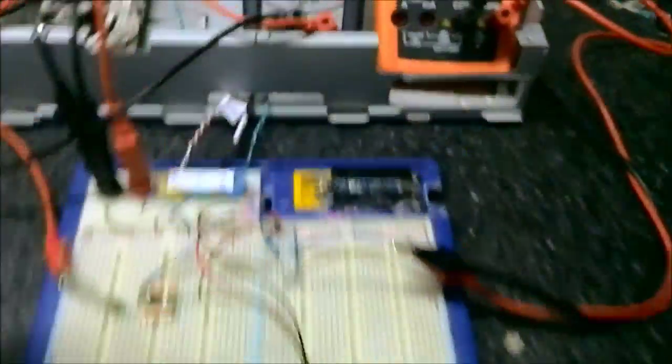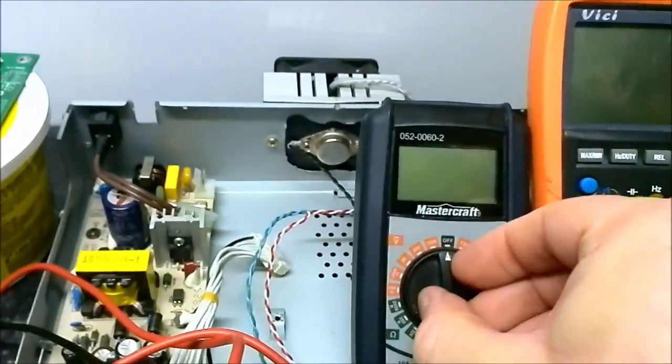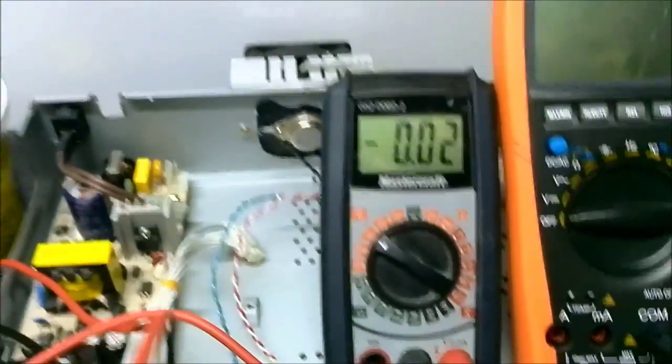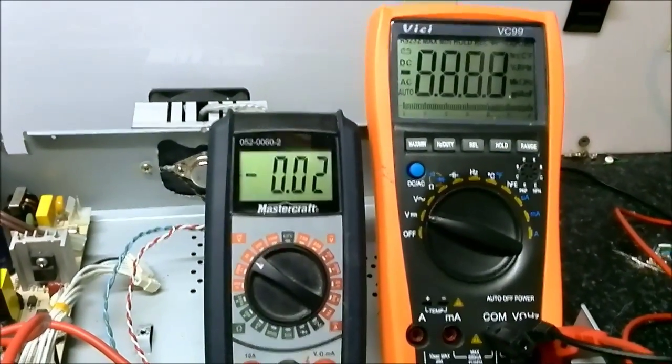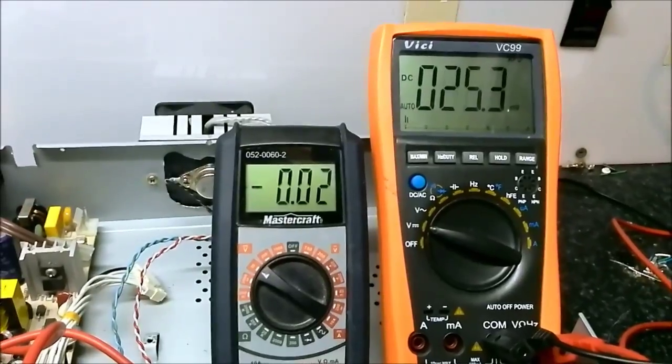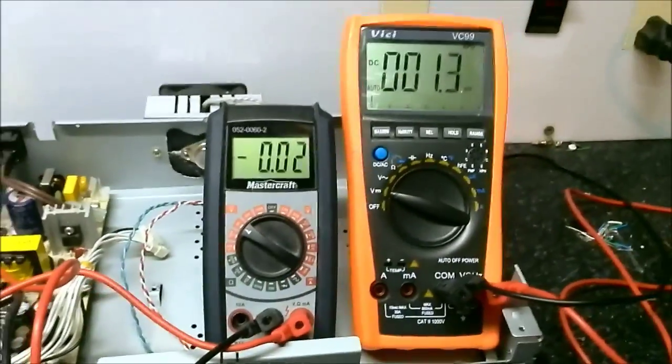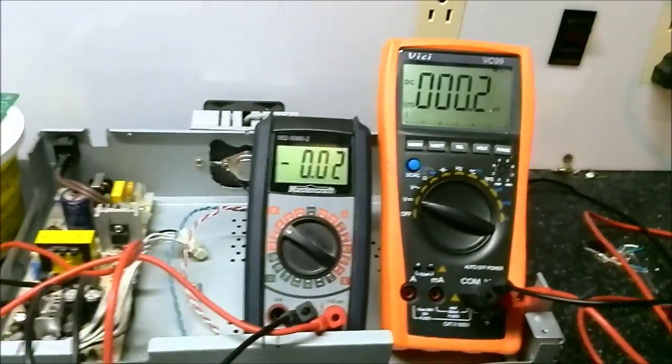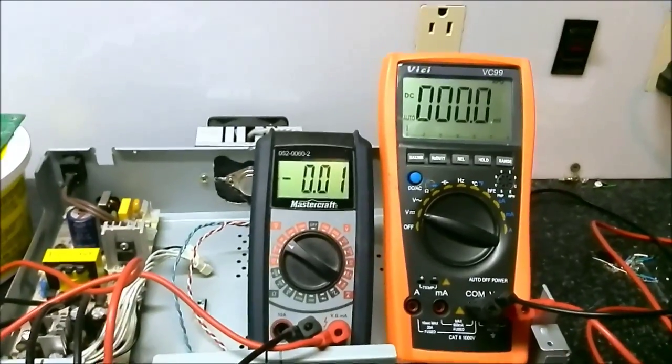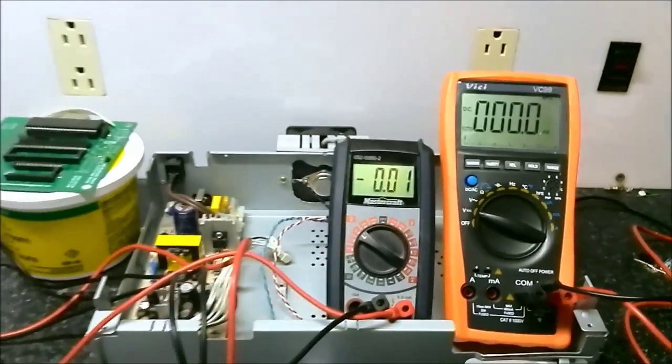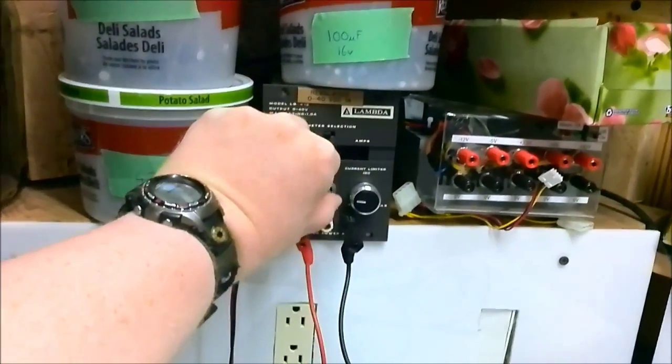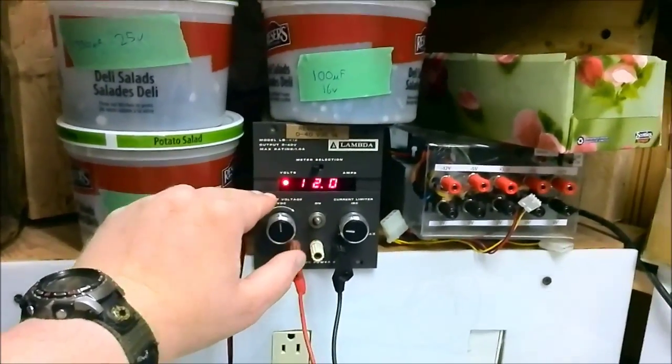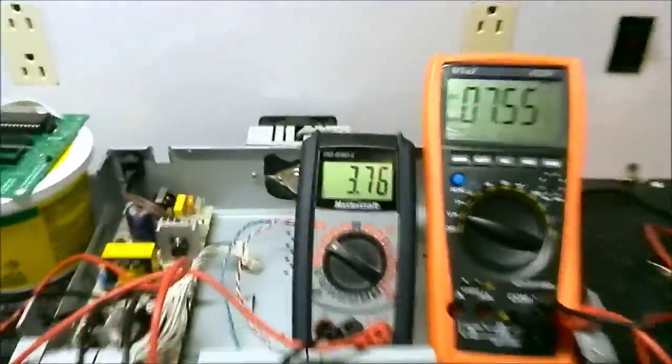Let's get things turned on. Let's get the cheapy Mastercraft going, 20V range. Now neither of these meters are calibrated, so this is only rough. Let's get 12V.